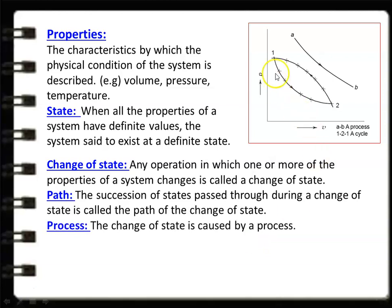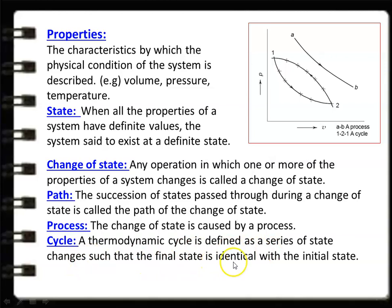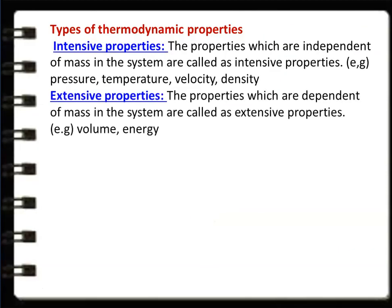The change of state is caused by a process. The line from 1 to 2 is the path, and 1 to 2 is the process; 2 to 1 is another process. A thermodynamic cycle is defined as a series of state changes such that the final state is identical with the initial state. When the system executes two different processes — 1 to 2 and 2 to 1 — returning to the original state, this 1-to-1 sequence is called a cycle.